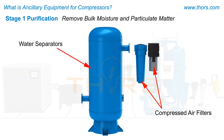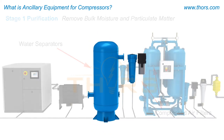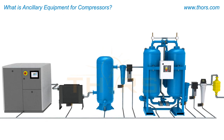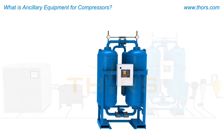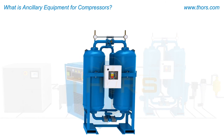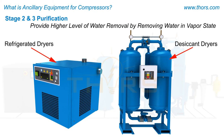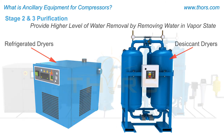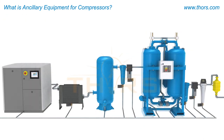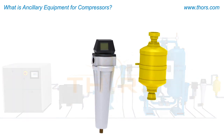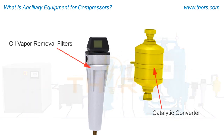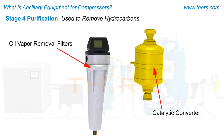Refrigerated dryers and desiccant dryers are used during stages 2 and 3 respectively to provide a higher level of water removal by removing water in the vapor state. Catalytic converters and oil vapor removal filters — also known as activated carbon filters — are used during stage 4 to remove hydrocarbons present in the air.